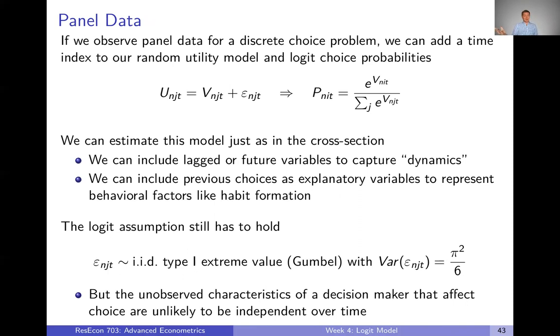On the opposite end of the spectrum, sometimes you have more data in the form of panel data. You don't just observe a decision maker making a choice once, you observe them multiple times. We can just tack a time term onto our utility, our representative utility, our random utility terms, and our choice probabilities.